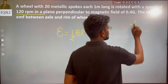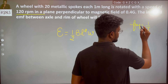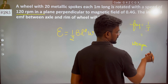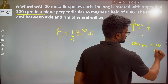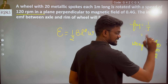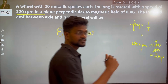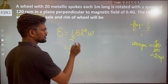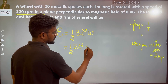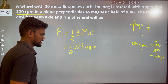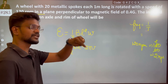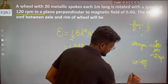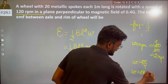120 RPM — if we convert it to per second, we divide by 60, giving 2 rotations per second. The angular velocity omega equals 2 pi nu, since angular velocity is displacement upon time, which gives 2 pi times 1 by T, which is the frequency nu.